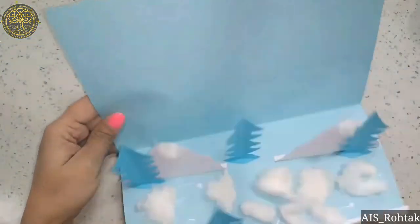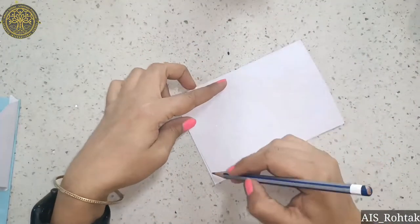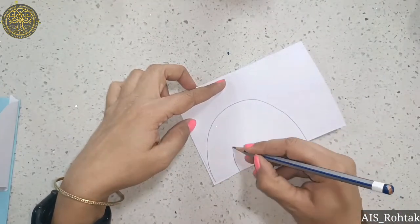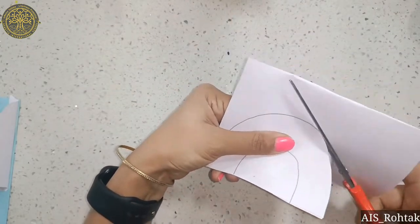For the polar bear, we take a white sheet, then we fold it, draw a big C shape, then draw again a C shape, then cut these lines.